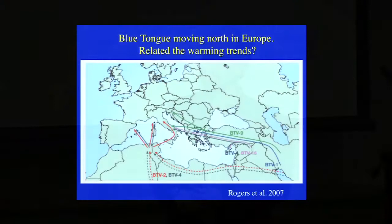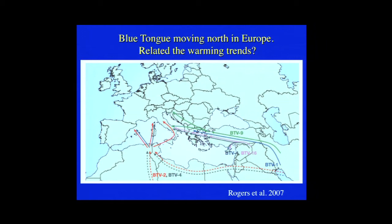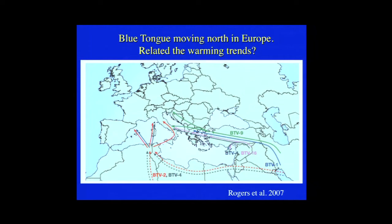There have been some documented diseases in domestic animals. This is bluetongue virus, where Dr. David Rogers from Oxford University has been mapping different strains of virus moving northward in Europe. Looking at time series of temperatures over Europe and controlling for various confounding factors, he concluded that there was a probable climate influence of gradual warming pushing this disease northward into northern Europe.